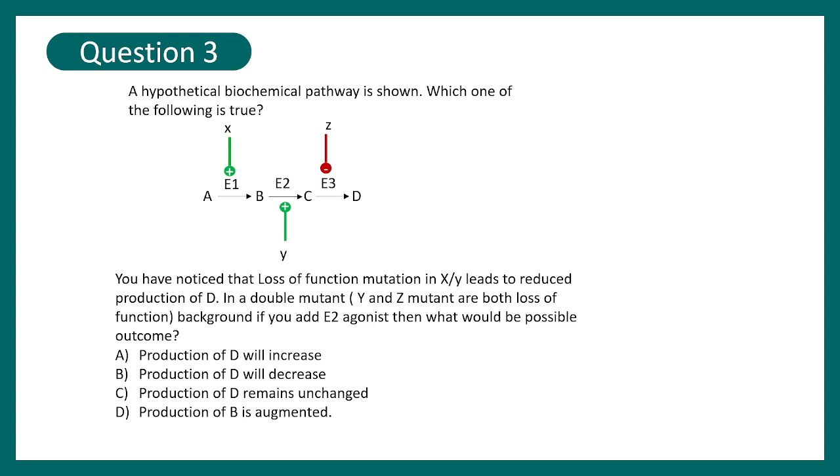Now in this case they have asked that if Y and Z are mutated, so it's a double mutant background and both are loss of function mutations, what would happen to production of D? In this background you have also added agonist for E2. So the production would increase, decrease, remain the same, or nothing can be, or production of B is augmented. So the correct answer would be production of D will increase.